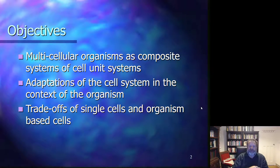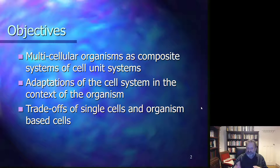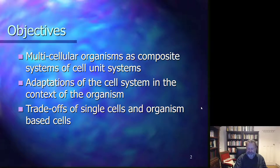Continuing the previous lecture, we look at how multicellular organisms can be seen as composite systems of units of the cell system. We will look at how the adaptation of the cell system in the context of the organism works, and we will also consider the trade-offs of single cells and organism-based cells.